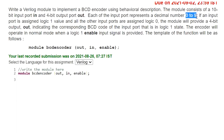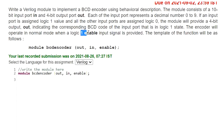If any of the input ports is assigned with logic 1, all other input ports will be assigned with logic 0. The module will provide a 4-bit output OUT indicating the corresponding BCD code of the input port that is in logic 1 state. The encoder will operate in normal mode when a logic 1 enable input signal is provided.